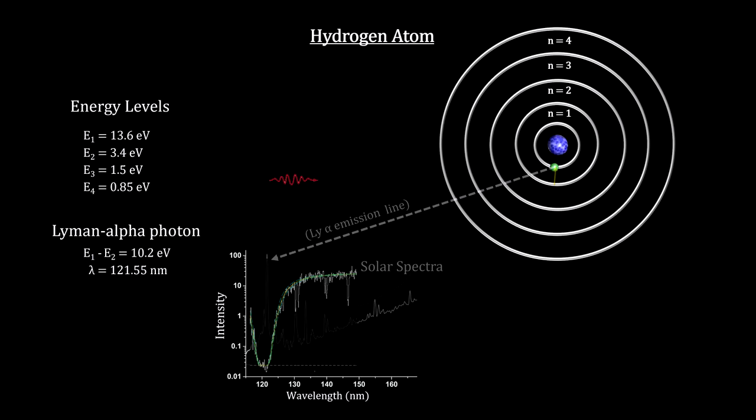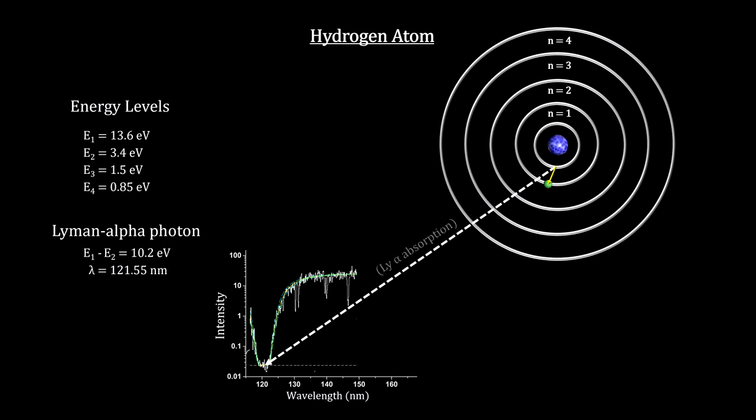In the other direction, such a photon would be absorbed when it encounters a hydrogen atom in its ground state, driving the electron to the higher energy level. Light passing through a large number of hydrogen atoms in the ground state would create Lyman alpha absorption dips in the light spectra.